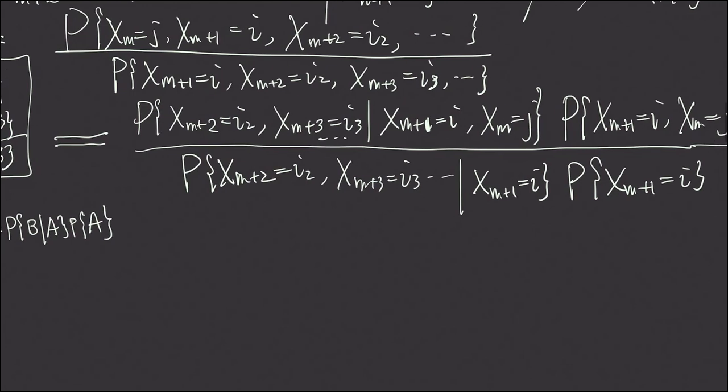And now if we look at this term right here and this term right here, we will find that due to the Markov chain's memoryless property, so here we use Markovian property, this event right here and this event right here, this is the past, this is the future, they are independent.